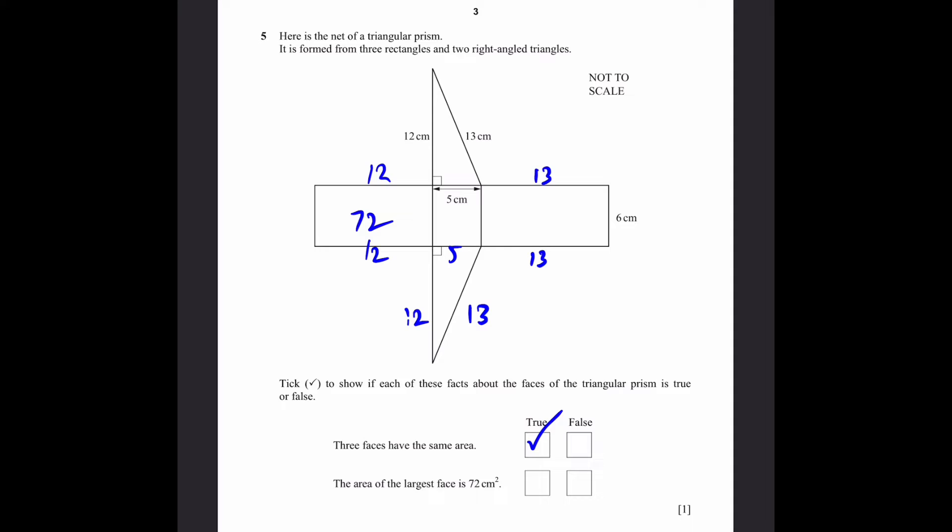Now we can find the areas of everything. 12 times 6 is 72. 13 times 6 is 78. 5 times 6 is 30. For the triangles, it's half times base times height. Half times 5 times 12, that's simply 30. And same for below. So these three have the same area. Of course, three faces have the same area is true. The area of the largest face is 72 centimeters squared. This is false. As we know, the largest face area is 78 centimeters squared since it has the highest area.